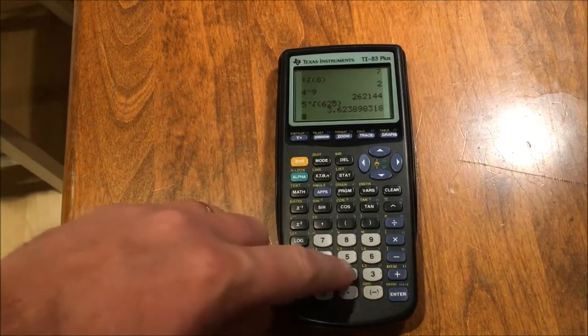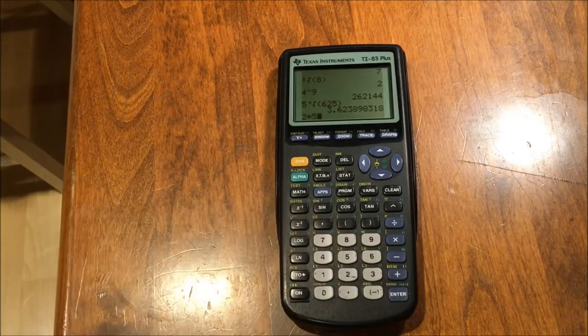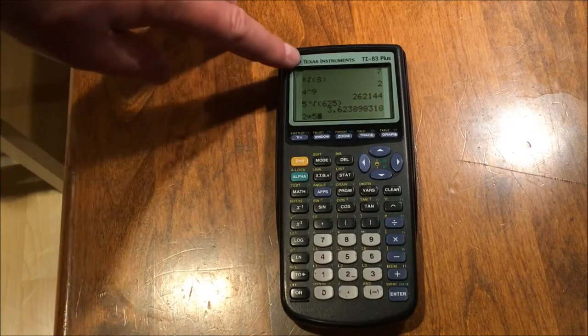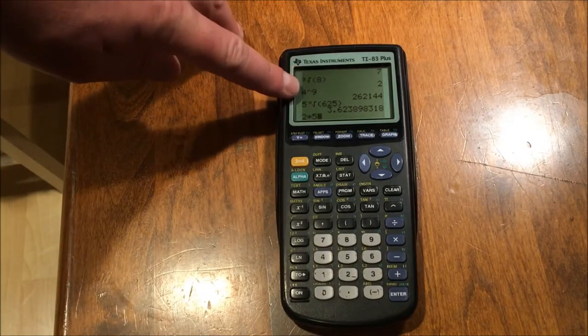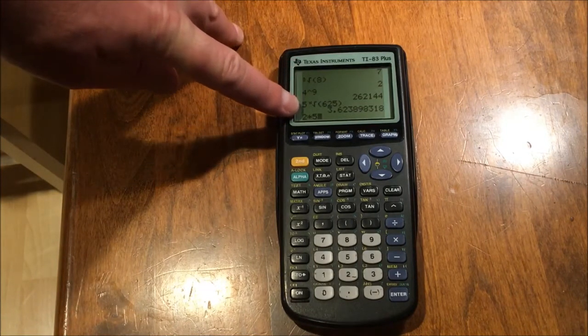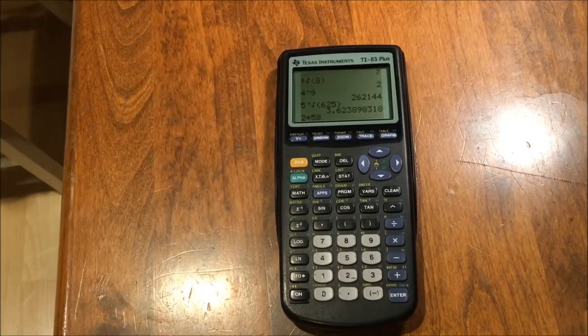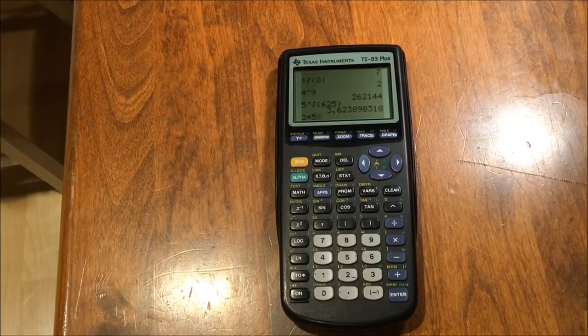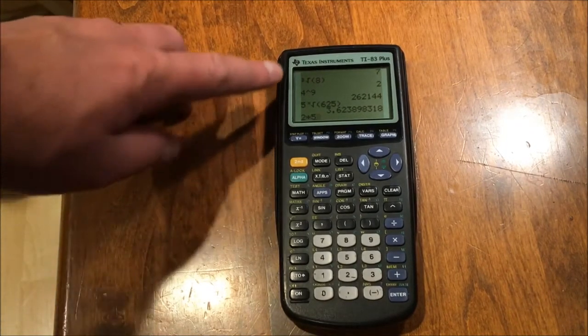I also want you to notice how many rows of data I can get on one screen. One, two, three, four, five, six, seven, eight. It's eight rows long, so you can see quite a history of your previous calculations.